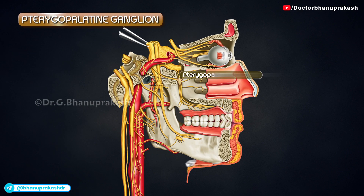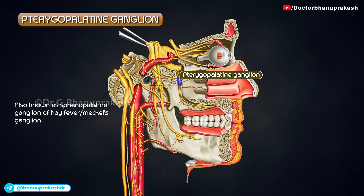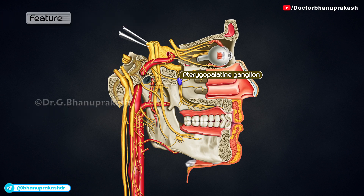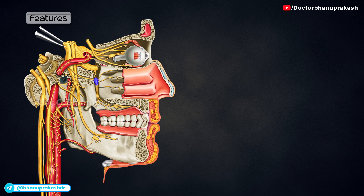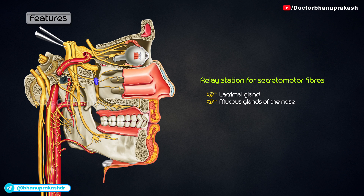Pterygopalatine ganglion, also known as the sphenopalatine ganglion or hay fever ganglion or Meckel's ganglion. It is the largest parasympathetic peripheral ganglion. It serves as a relay station for secretomotor fibers to the lacrimal gland and to the mucous glands of the nose, paranasal sinuses, palate and pharynx.